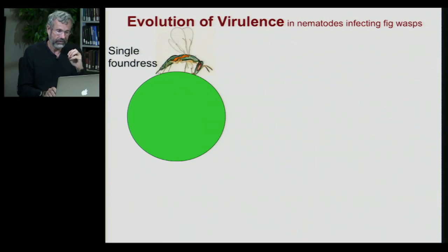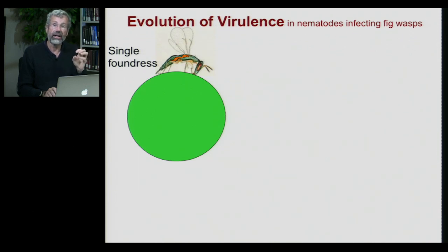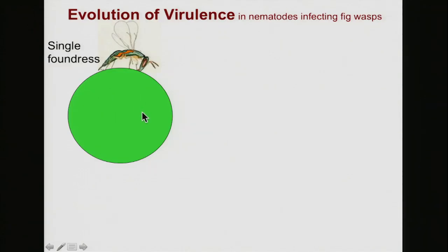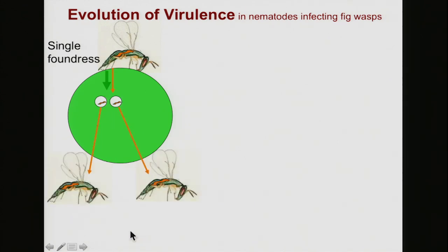I want to give an example of how we can test for the evolutionary plasticity of virulence by looking at a particular parasite — a nematode, a little worm that infects fig wasps. Fig wasps have a very peculiar ecology: a female lays her eggs in a fig, and all of her eggs grow up there. The only other wasps her babies ever interact with are their siblings. So you have a single foundress who lays her eggs, she's infected, and the infection goes with her from parent to offspring. The babies grow up, leave, go off somewhere else, and lay their eggs in yet another fig. They never see any other figs except during that one time they were back in the fig they were born in.